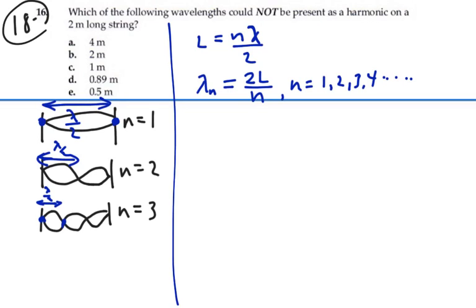If we're looking for possible wavelengths that could be a harmonic on a 2 meter long string, our wavelengths are going to be two times two over n, or four divided by n, where n is an integer number.